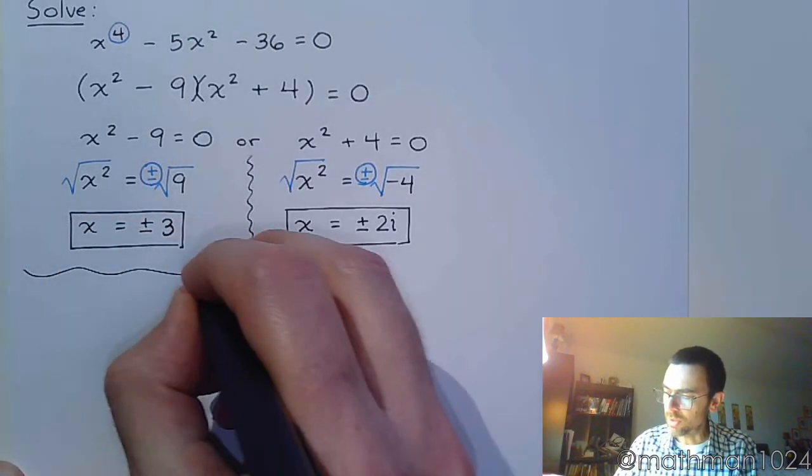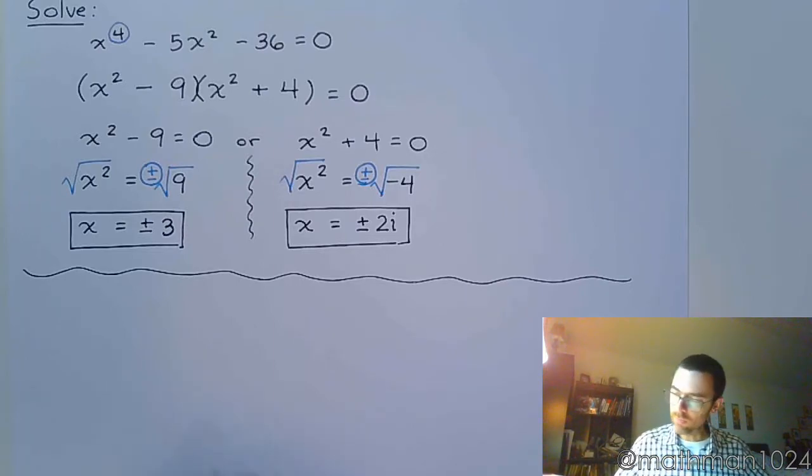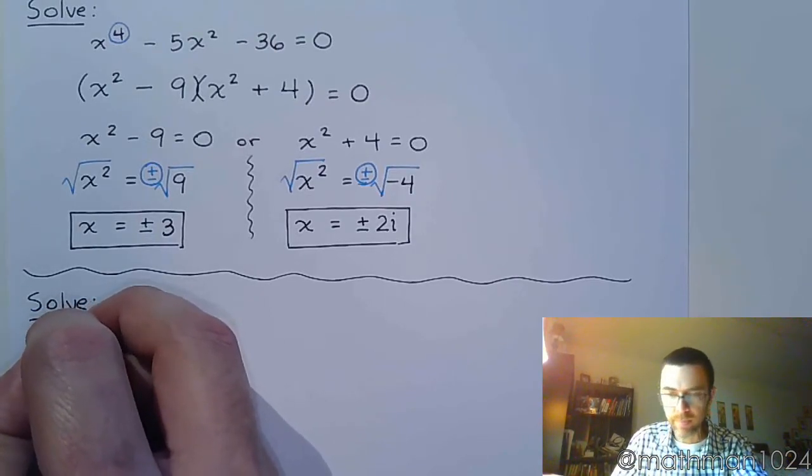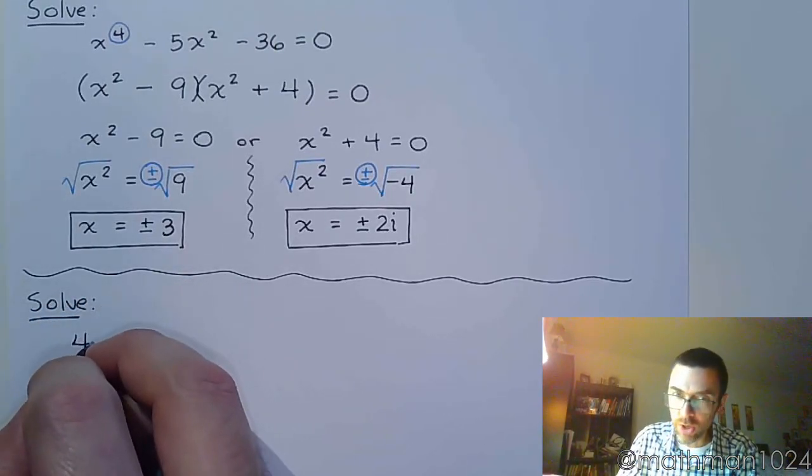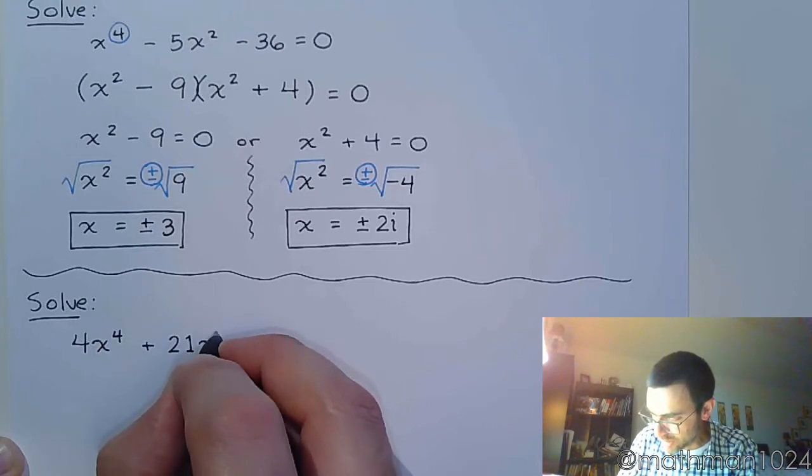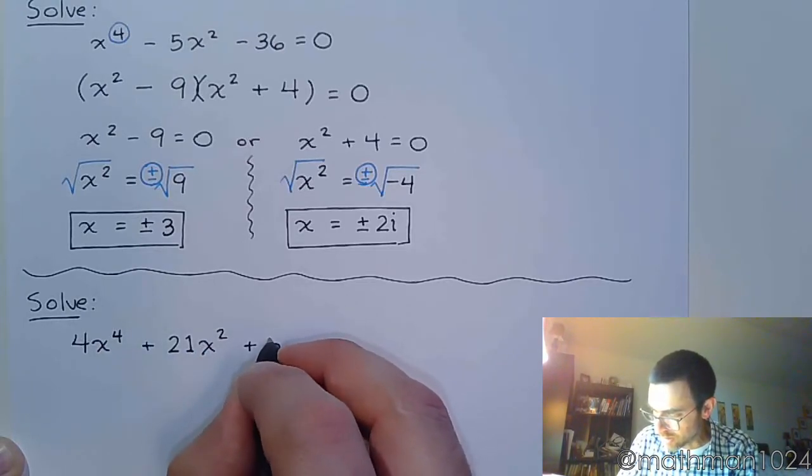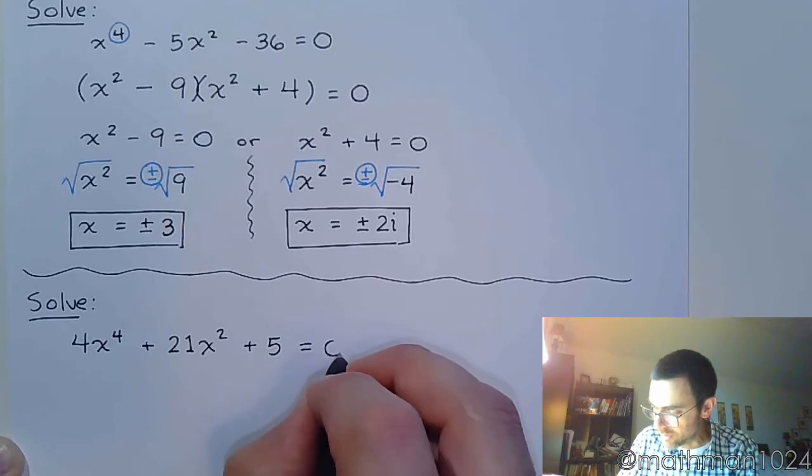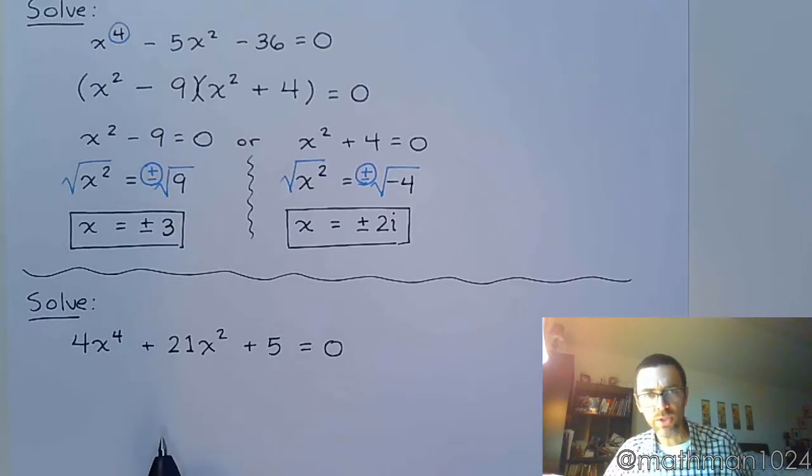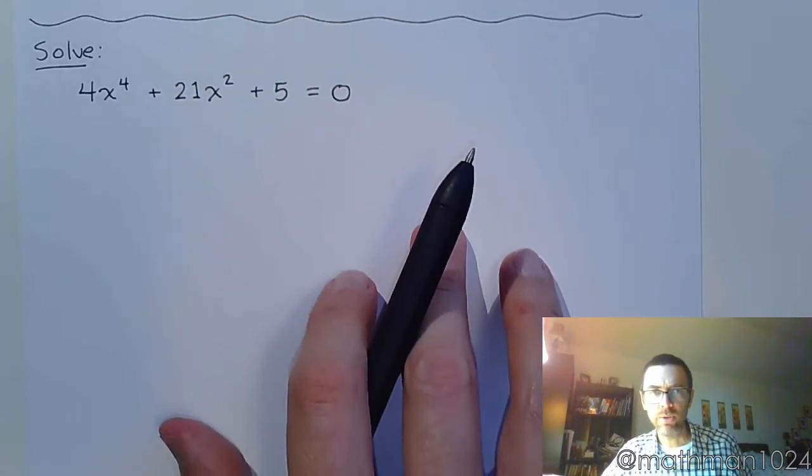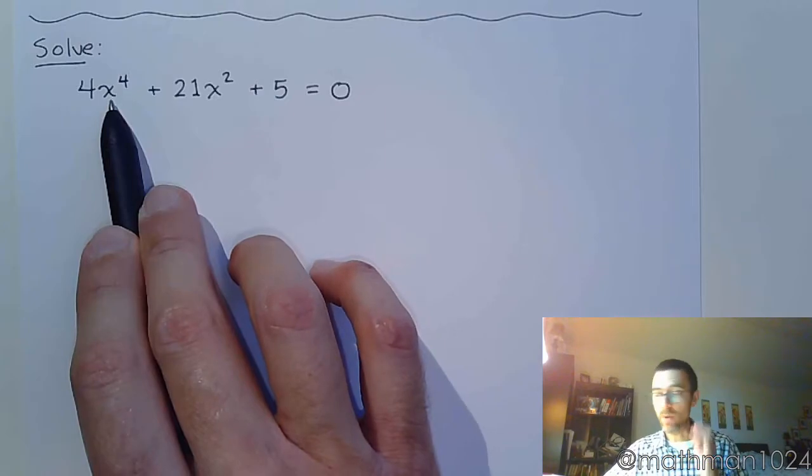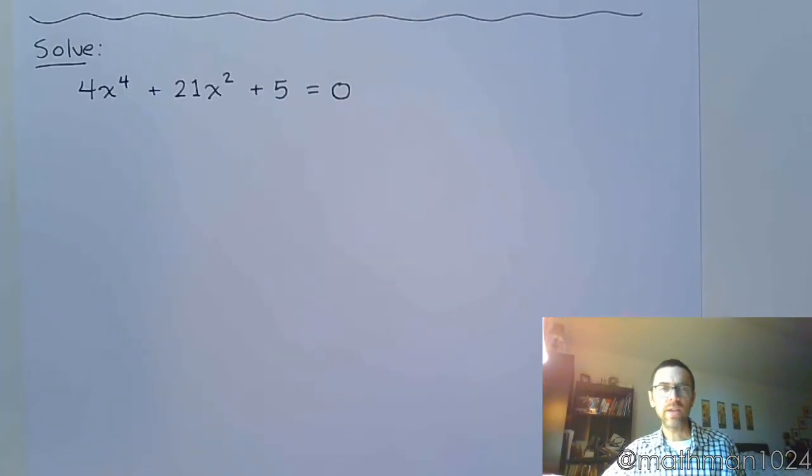Let's try another one very similar to this. So let's solve the equation 4x⁴ + 21x² + 5 = 0. Let's see what happens here. Well, we see that this is quadratic in nature because you have your constant term here at the end, you have x² and if you double this guy, you'd have x⁴. If you double the power. So let's try to factor this.